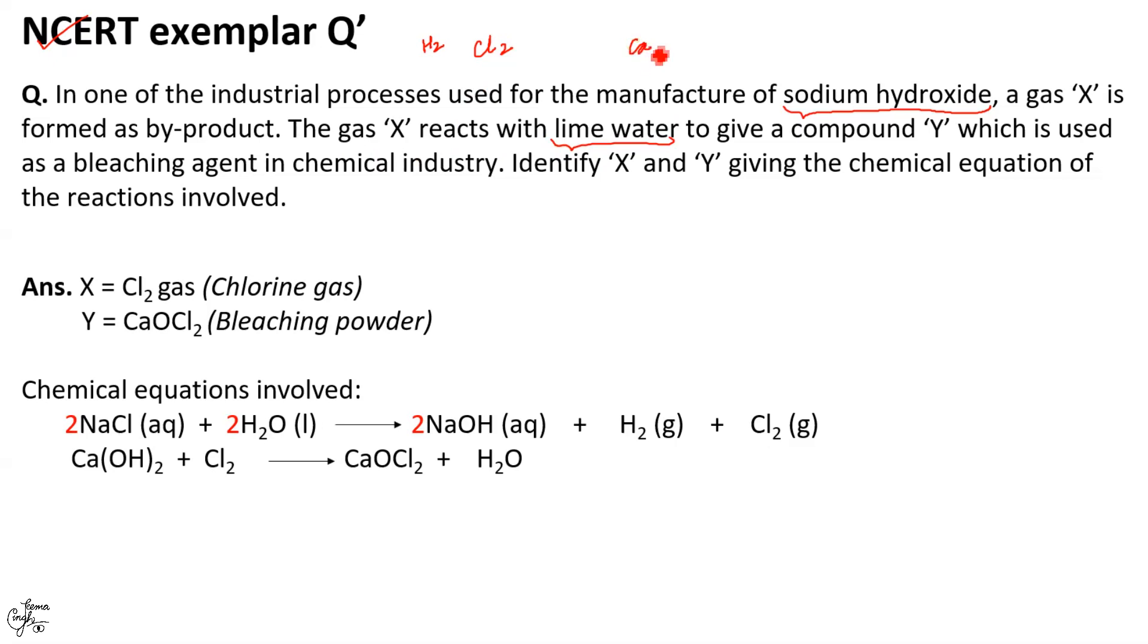A gas X is formed as by-product. The gas X reacts with lime water to give a compound Y which is used as a bleaching agent in chemical industry. So, you know this bleaching agent is going to be your bleaching powder. Identify X and Y giving the chemical equation of the reaction involved.